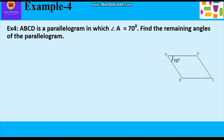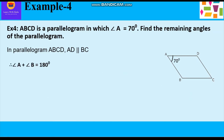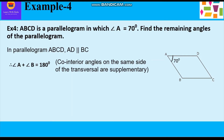Let's start with example 4. ABCD is a parallelogram in which angle A is equal to 70 degrees. Find the remaining angles of the parallelogram. Now in parallelogram ABCD, as you can see in the figure, AD is parallel to BC. So we can say that angle A and angle B form co-interior angles and they are supplementary.